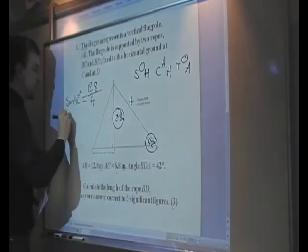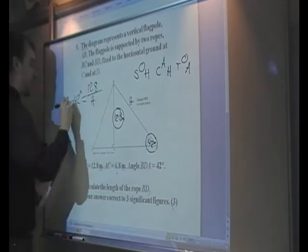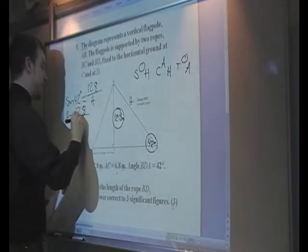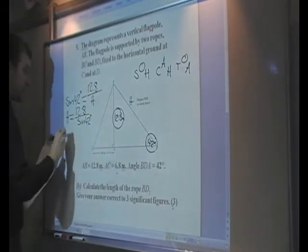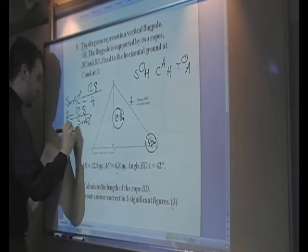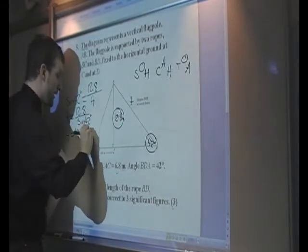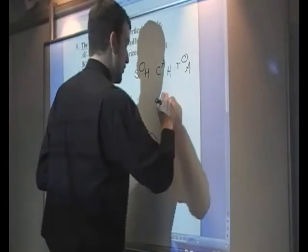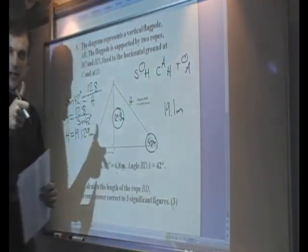We can rearrange this to make the hypotenuse the subject. The hypotenuse will equal 12.8 divided by sine 42, which equals 19.129 metres, which to three significant figures would be 19.1 metres. Job done.